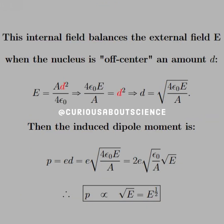This internal field balances the external field E when the nucleus is 'off-center' by an amount d. So in the electric field expression, for r we plug in d, which we see in red. Then algebraically solving for d, we see that d is proportional to the square root of the electric field. This is important to note because then the induced dipole moment is p = ed, where e is the electron charge. Substituting in d leaves us with e times the square root of 4ε₀E/a, which simplifies to 2e times √(ε₀/a) times √E. That simply shows that p is now proportional to the square root of E, or E to the 1/2.